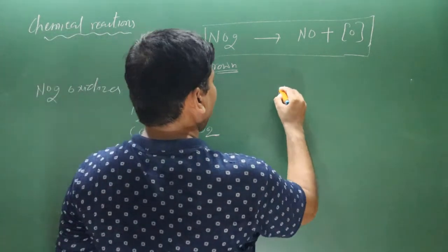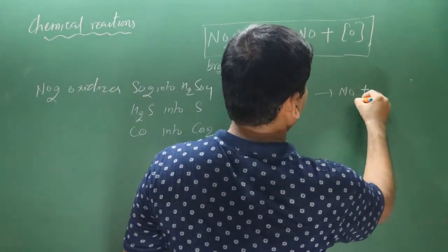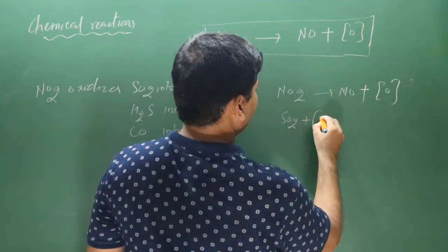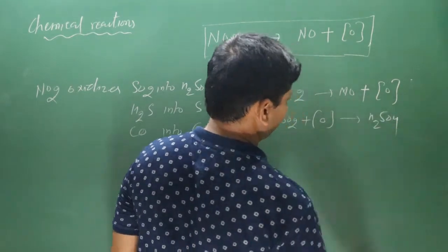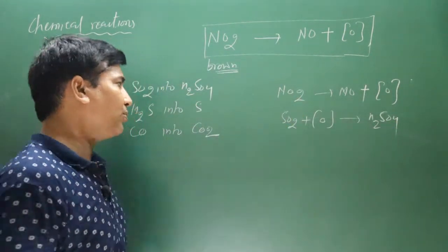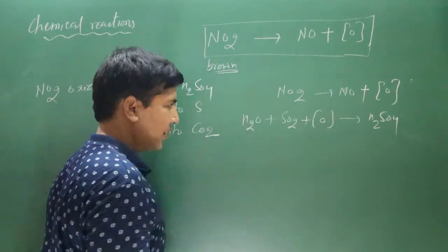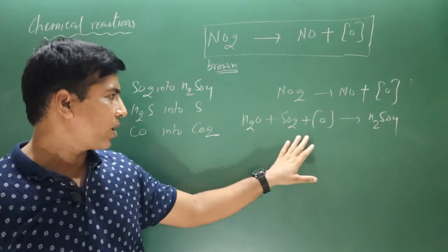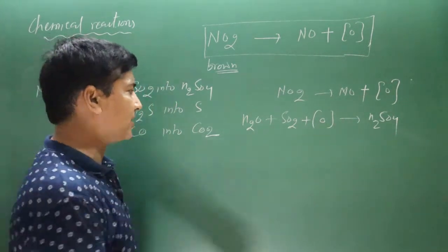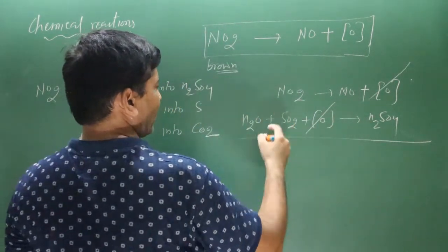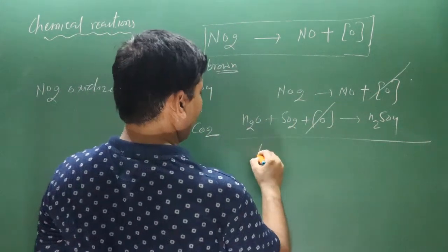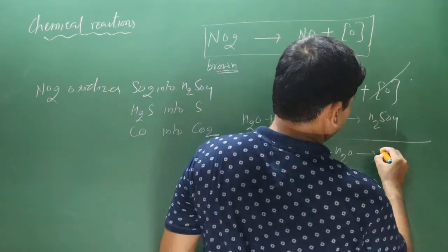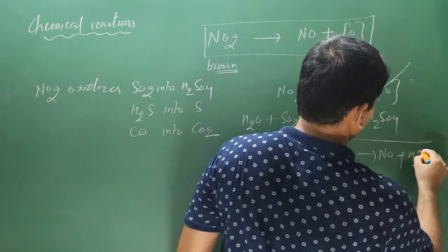NO2 oxidizes sulfur dioxide into sulfuric acid: nascent oxygen from NO2 oxidizes SO2 into H2SO4. Using a water molecule to provide hydrogen: hydrogen is balanced, sulfur is balanced, and 4 oxygen on each side gives a balanced equation. Final: NO2 + SO2 + H2O → NO + H2SO4.